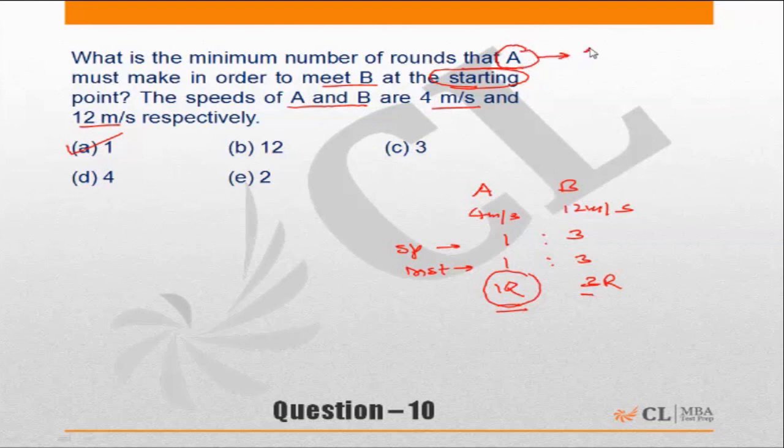The question refers to how many rounds A needs to take. A needs to take one round. If the question was how many rounds B needs to take, B needs to take three rounds. The ratio of the speeds is what gives us the answer.